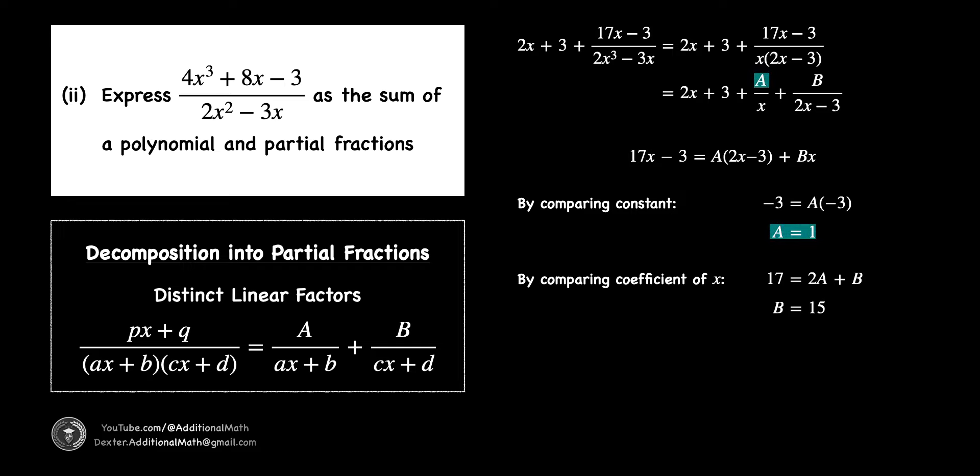Finally, by replacing A to be 1 and B to be 15, we will get the polynomial to be 2x plus 3, and the partial fractions to be 1 over x plus 15 over 2x minus 3. And that's the answer to this question.